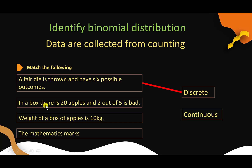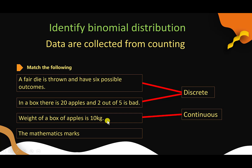Second example: in a box there are 20 apples and 2 out of 5 are bad. We have 20 apples, so N is given, and apples are a discrete type of data — so this is a discrete distribution. Third example: the weight of a box of apples is 10 kilograms. Kilograms is a continuous measurement, so this is a continuous distribution. Similarly, mathematics marks are also a continuous measurement, so that is a continuous distribution.